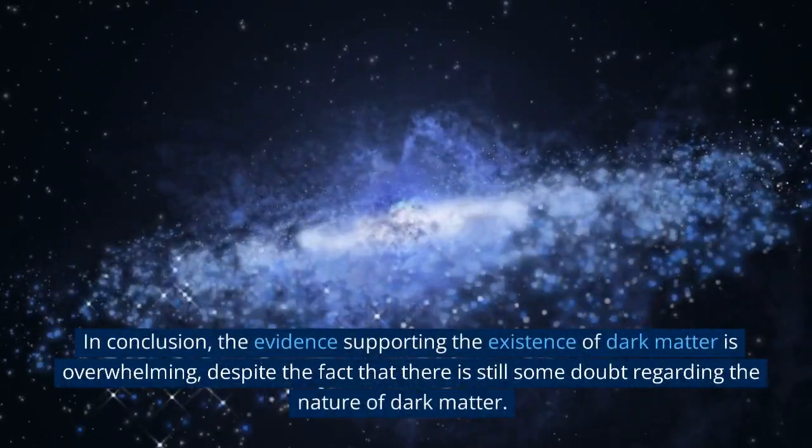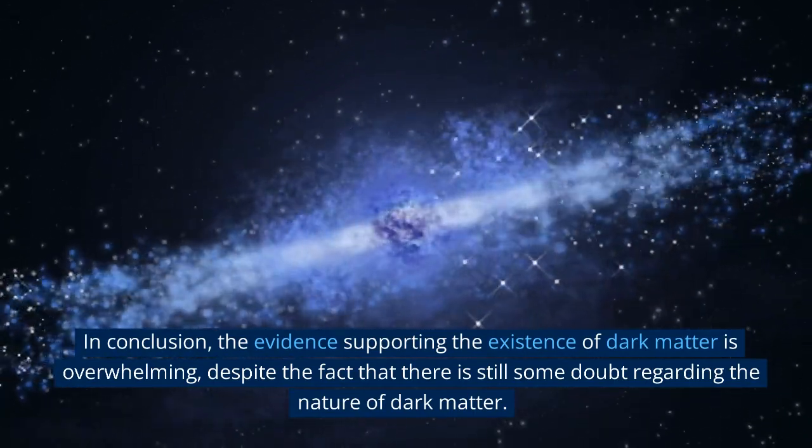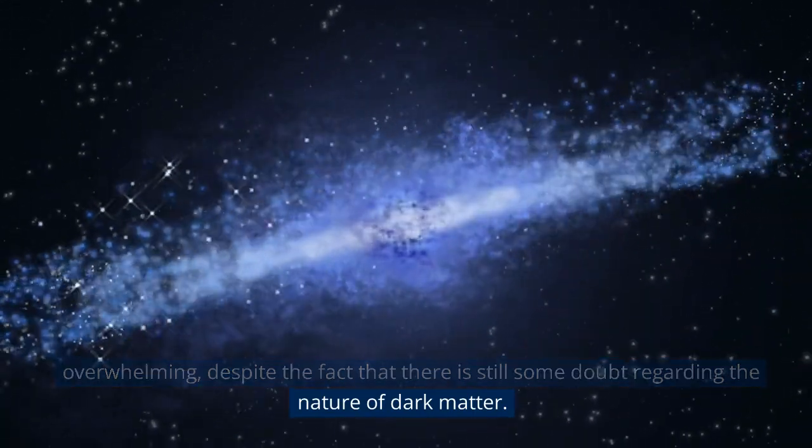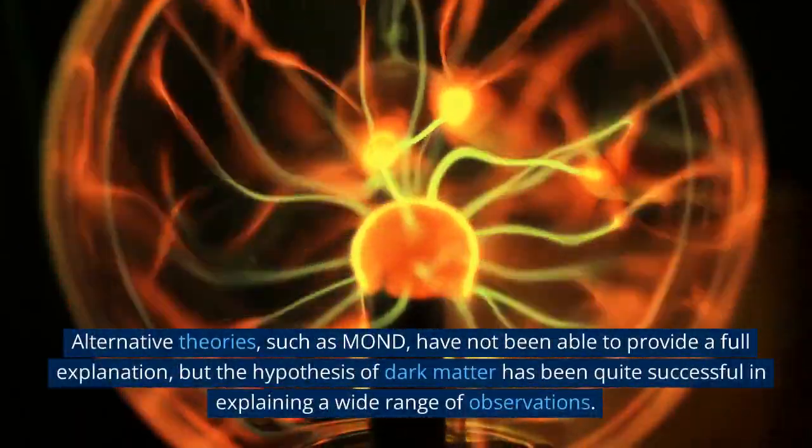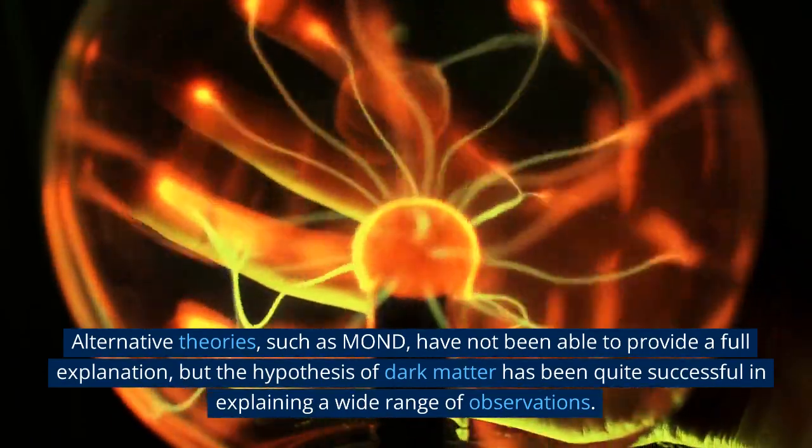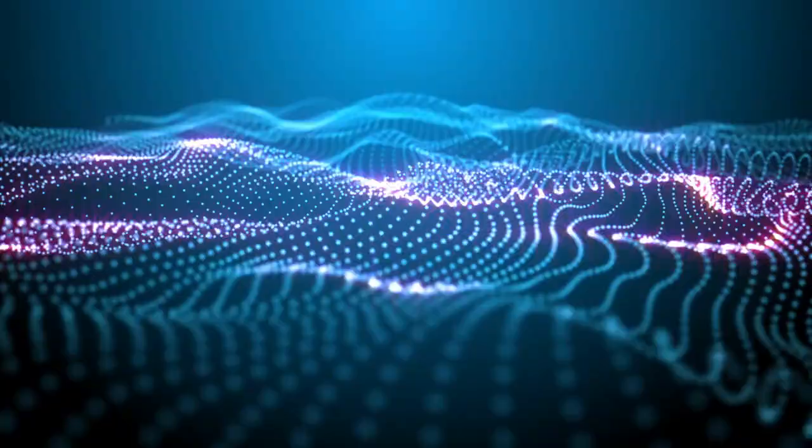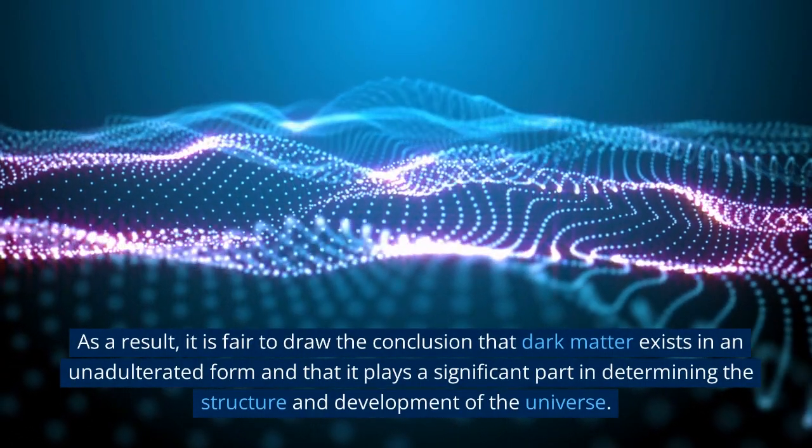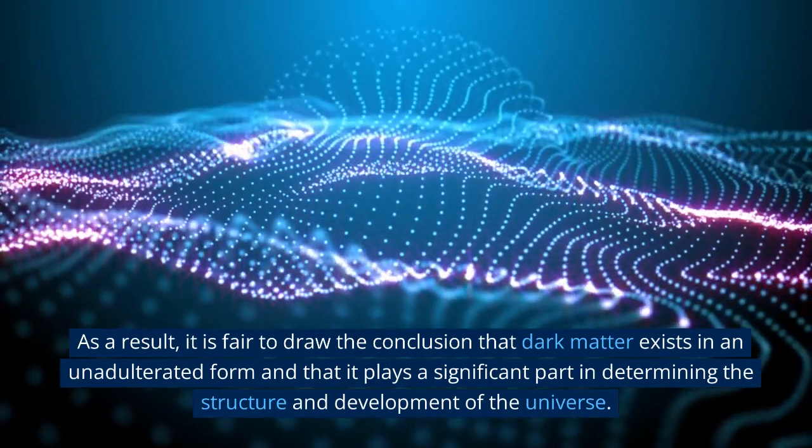In conclusion, the evidence supporting the existence of dark matter is overwhelming, despite the fact that there is still some doubt regarding the nature of dark matter. Alternative theories, such as MOND, have not been able to provide a full explanation, but the hypothesis of dark matter has been quite successful in explaining a wide range of observations. As a result, it is fair to draw the conclusion that dark matter exists in an unadulterated form and that it plays a significant part in determining the structure and development of the universe.